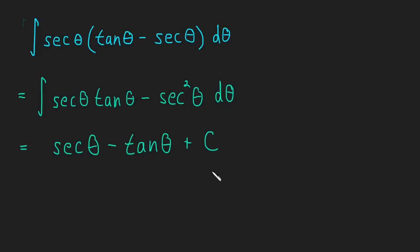And of course, we need our plus C. So make sure you see what's happening. Make sure you go back and memorize. The derivative of secant is secant tan. The derivative of tan is secant squared.